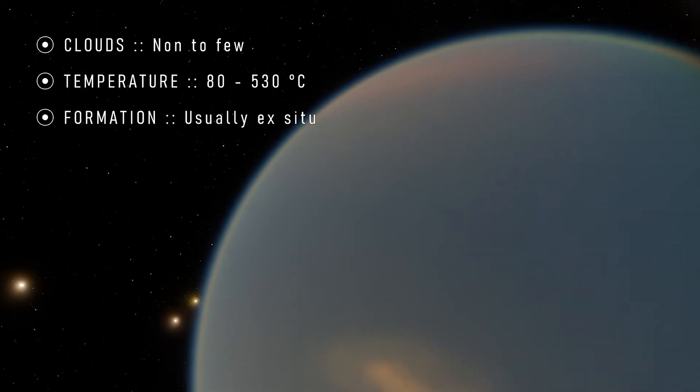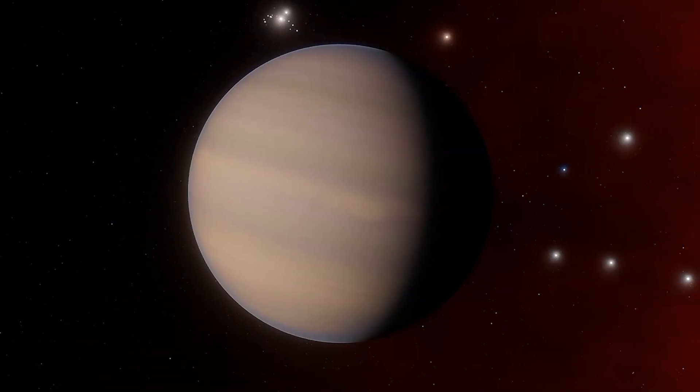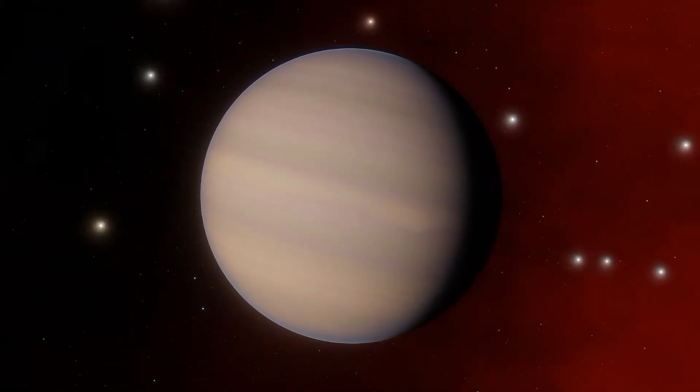Around a sun-like star, they could exist in Mercury's orbit. At Type 4 giants, we get into the hot Jupiter territory.